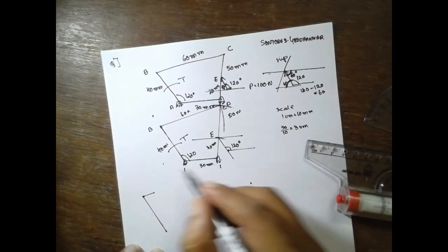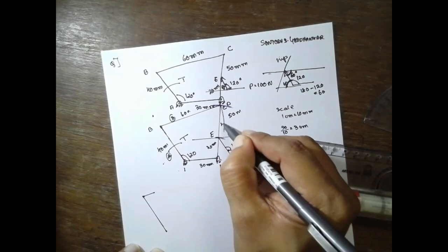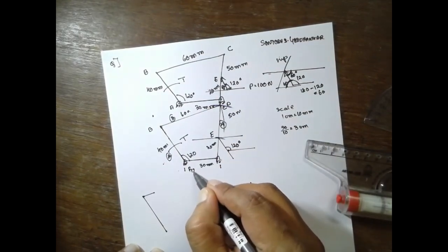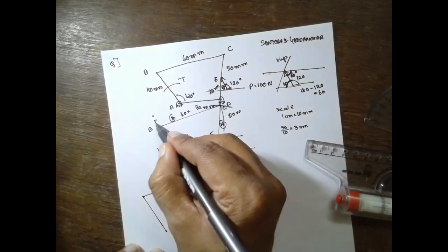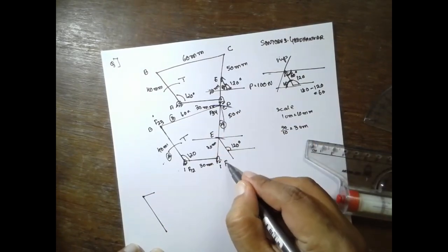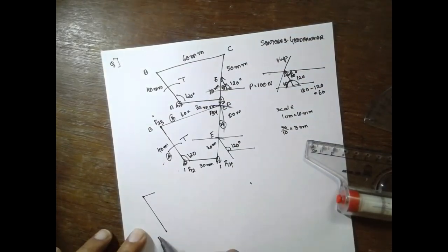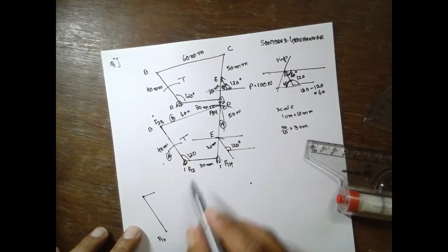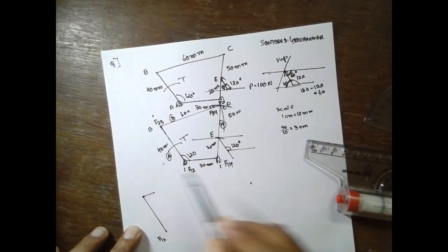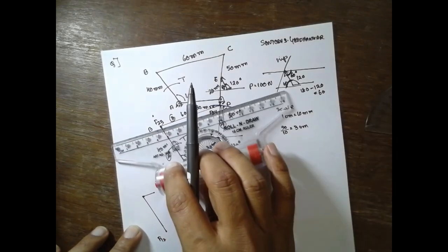Before proceeding, go for naming. Link 1 — these are the fixed links. This is link 2, link 3, link 4. Now go for identification of forces: F12, F23, F34, F14. F12 — we don't know the direction because it is a hinge part. But F3 we know — the reaction acts here. Next is link 3.